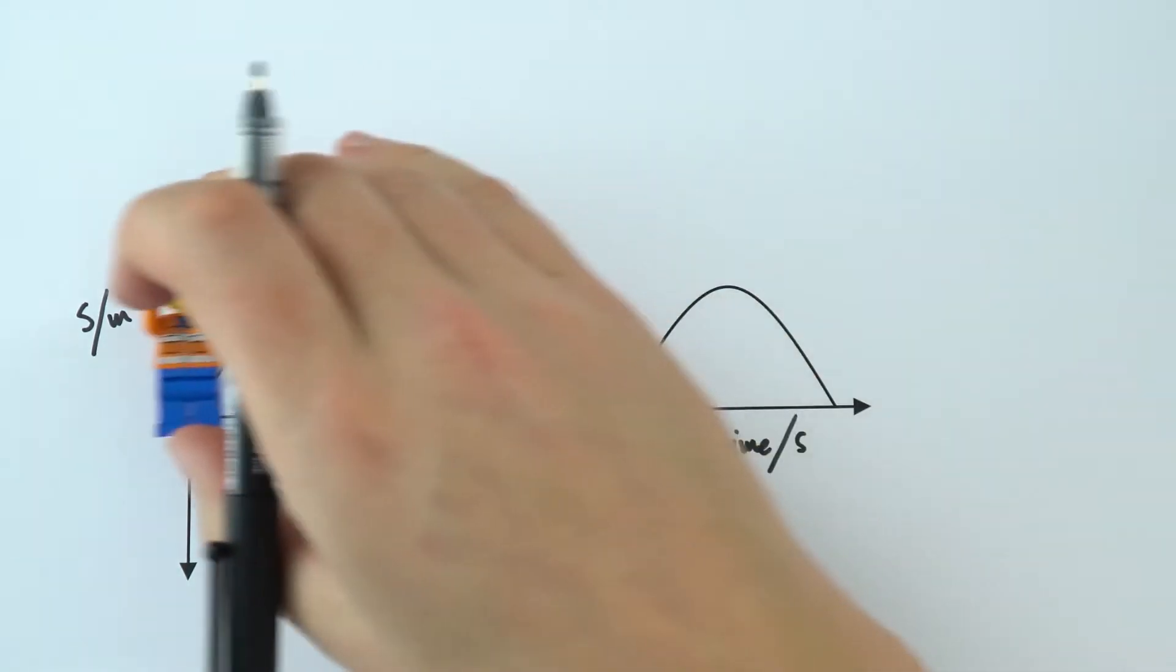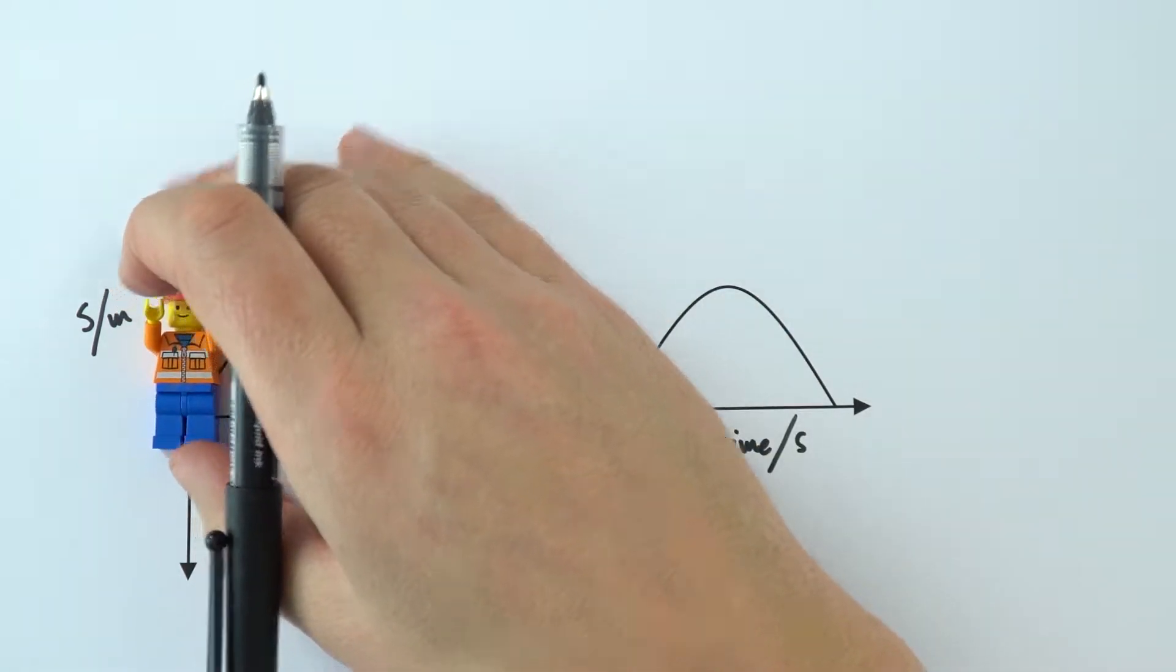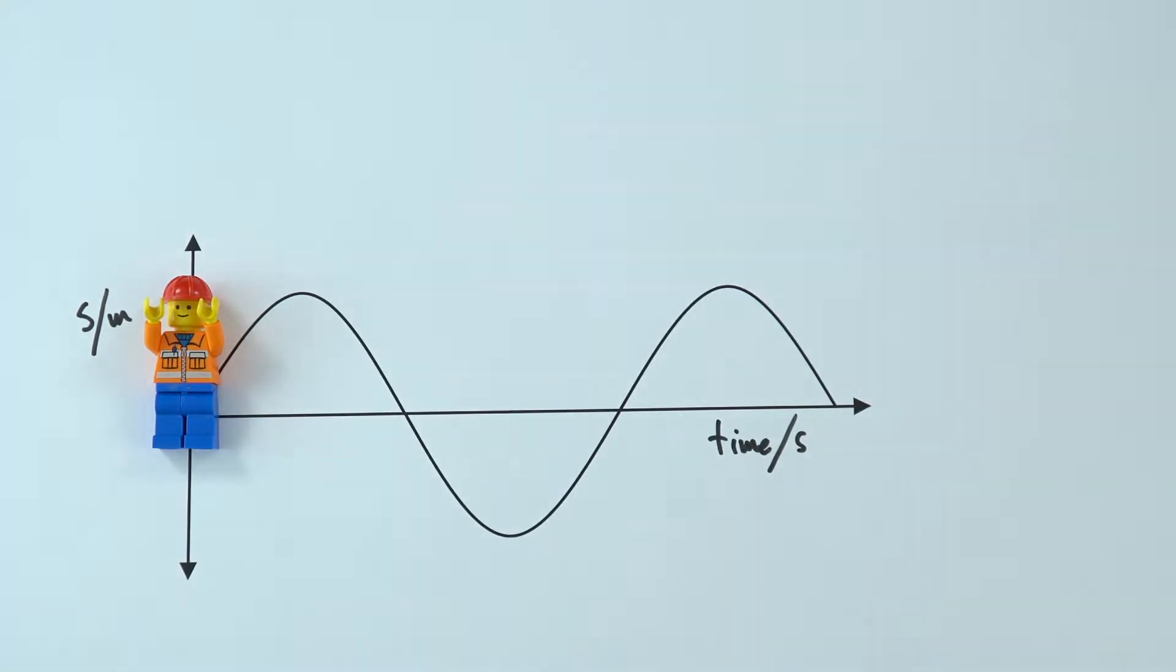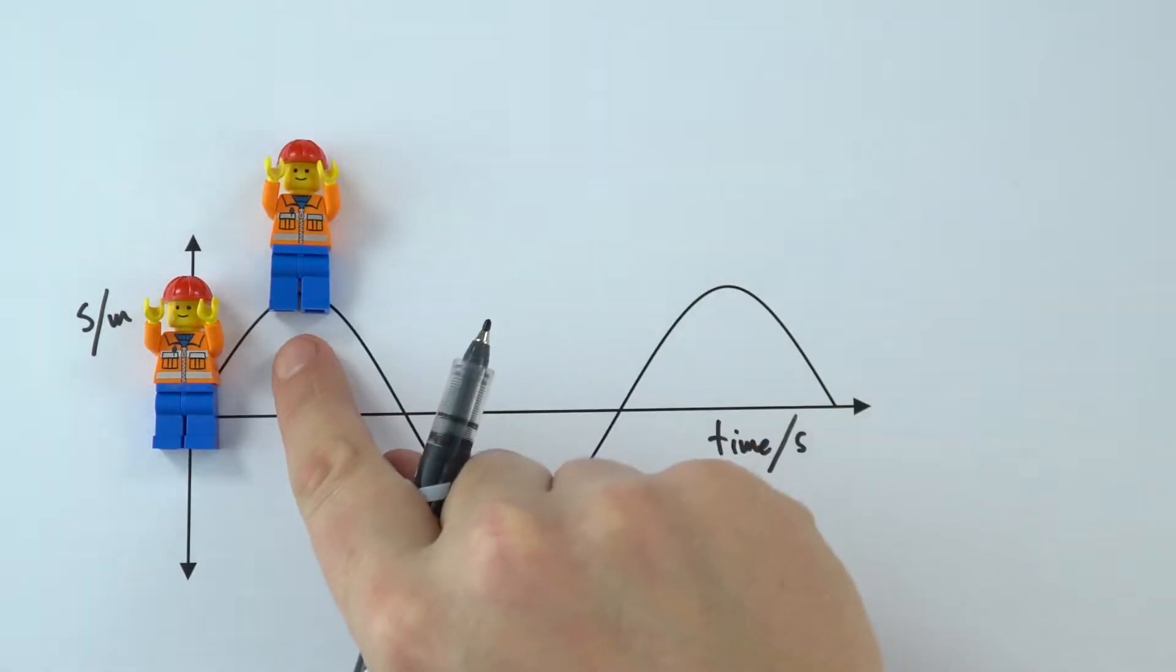Now effectively at time zero, let's just say that this person is at the middle part of the wave. Well, a short amount of time later, they're going to have moved up slightly. So we can now think about them in the up position.